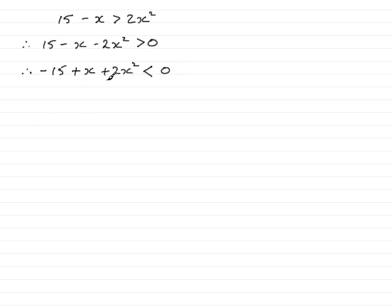Now this is not in the right order. Let's have the x squared term at the front, then the x, and then the constant. So if I rearrange it now, I therefore have 2x squared, then the plus x, and then minus 15 is less than 0.